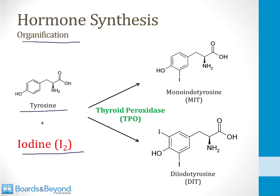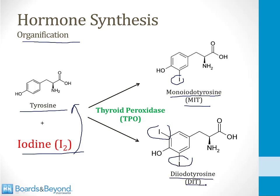Thyroid peroxidase catalyzes the addition of iodine to tyrosine. If you add one iodine atom, you create monoiodotyrosine, or MIT. If you add two iodine atoms, you create diiodotyrosine, or DIT. These get synthesized on the tyrosine residues sitting on thyroglobulin structures in the follicle of the thyroid gland.